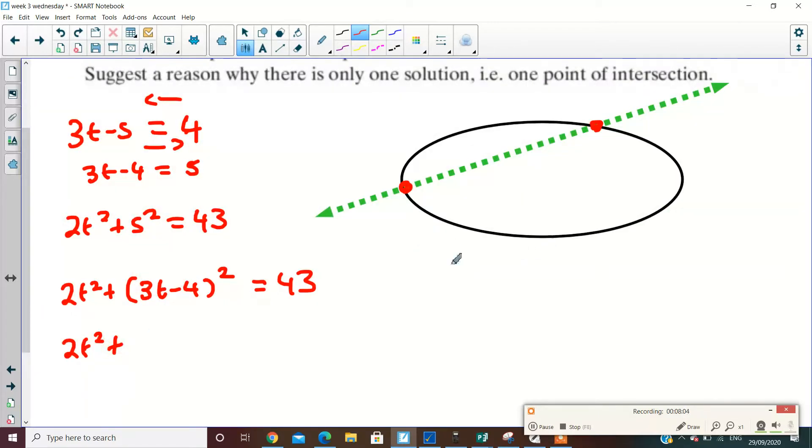2t squared, I'm going to square that out. It's 3t minus 4, 3t minus 4, it's going to be 9t squared minus 24t plus 16 take away your 43. And then you should get 11t squared minus 24t minus 27.